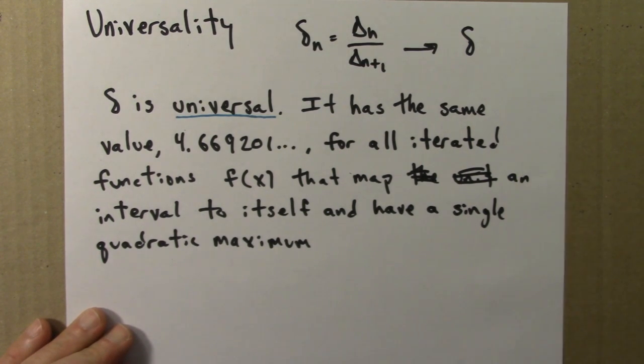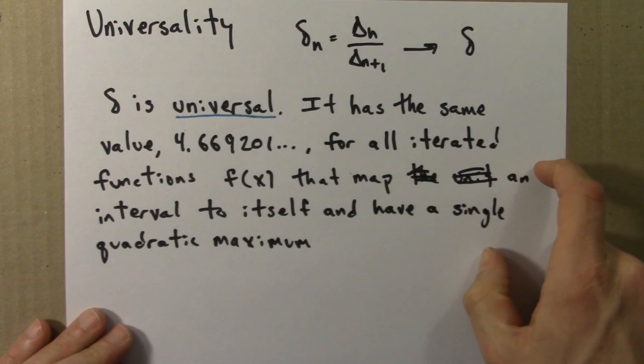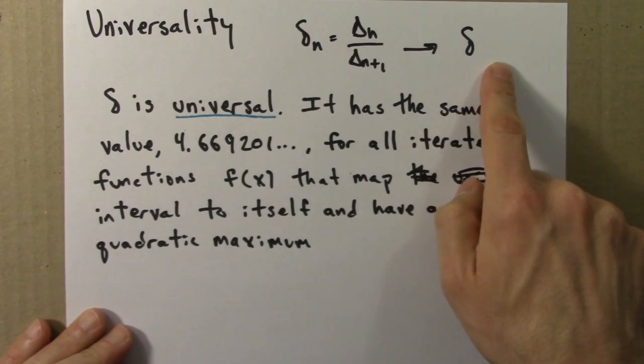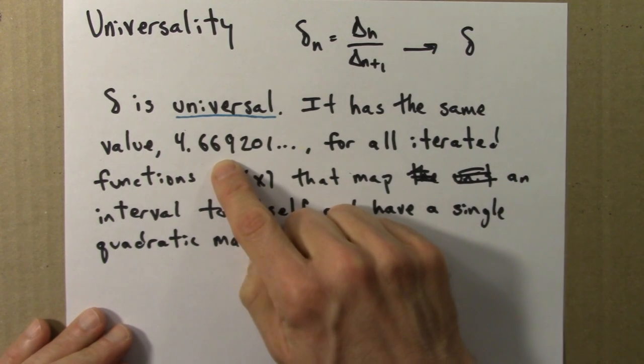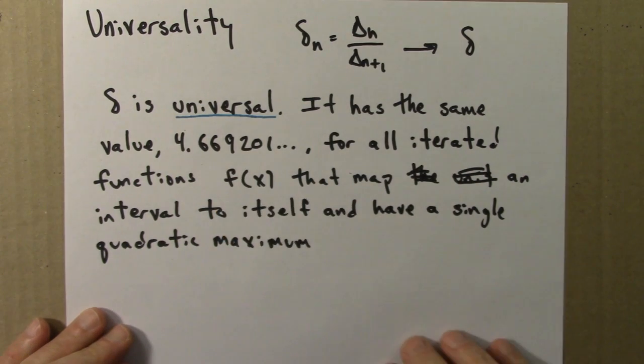So any function you come up with that meets these very mild criteria, you can make a bifurcation diagram, find the bifurcation points like we did, calculate the deltas, go deeper and deeper, let n get larger and larger, and this number will appear. So this number is a property of all of those functions.